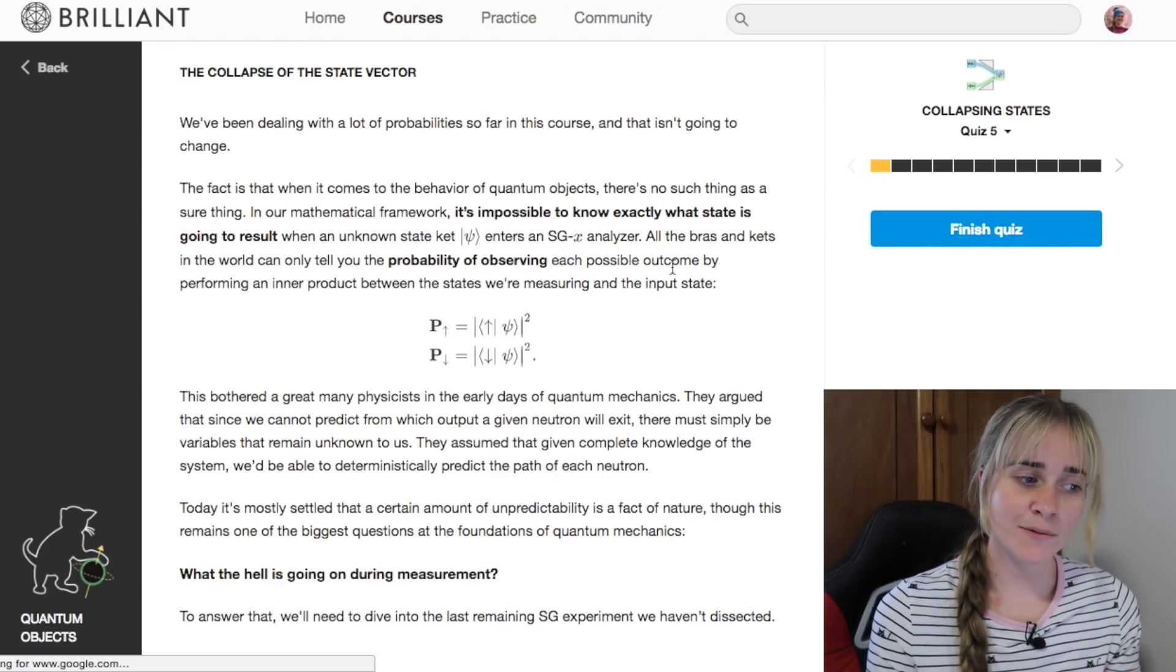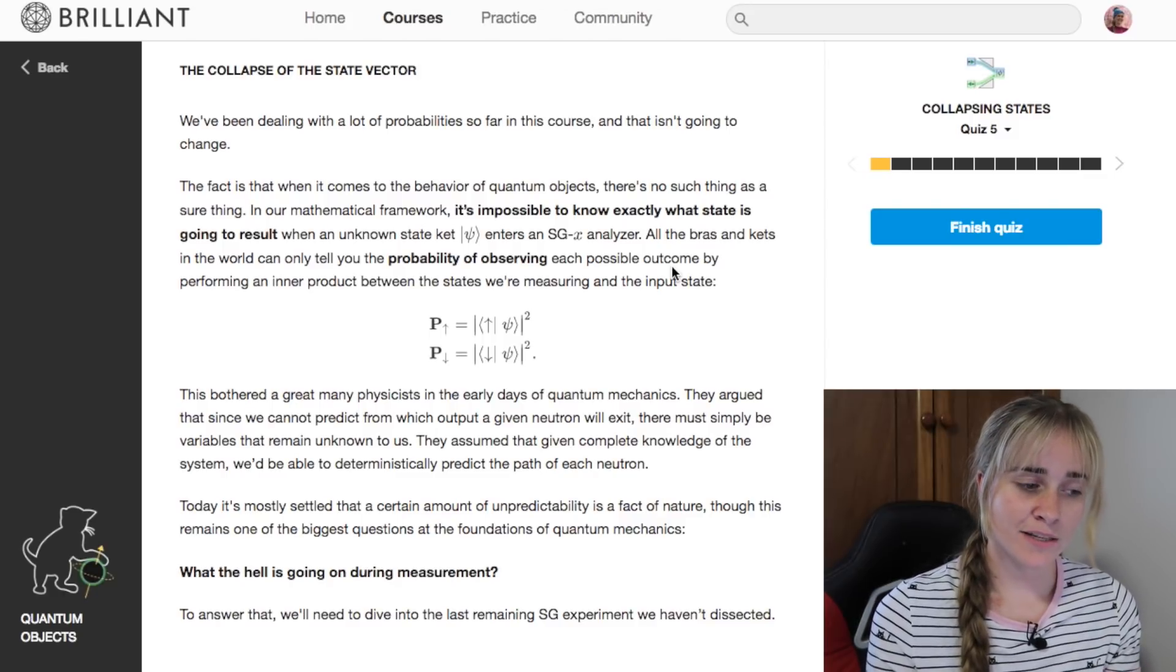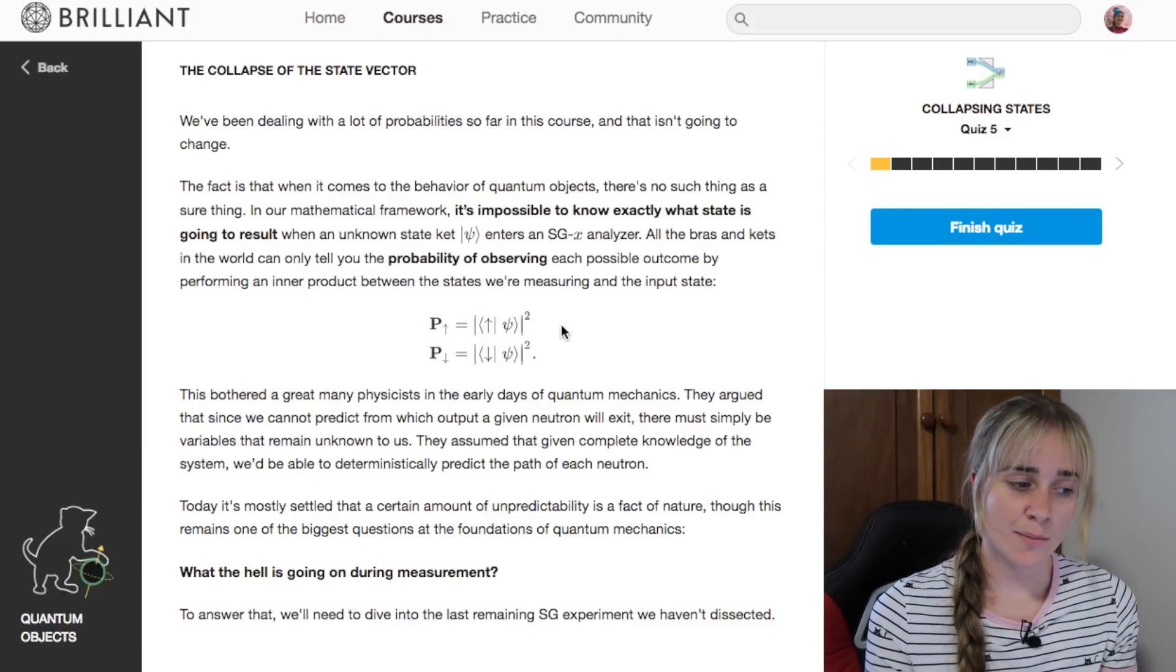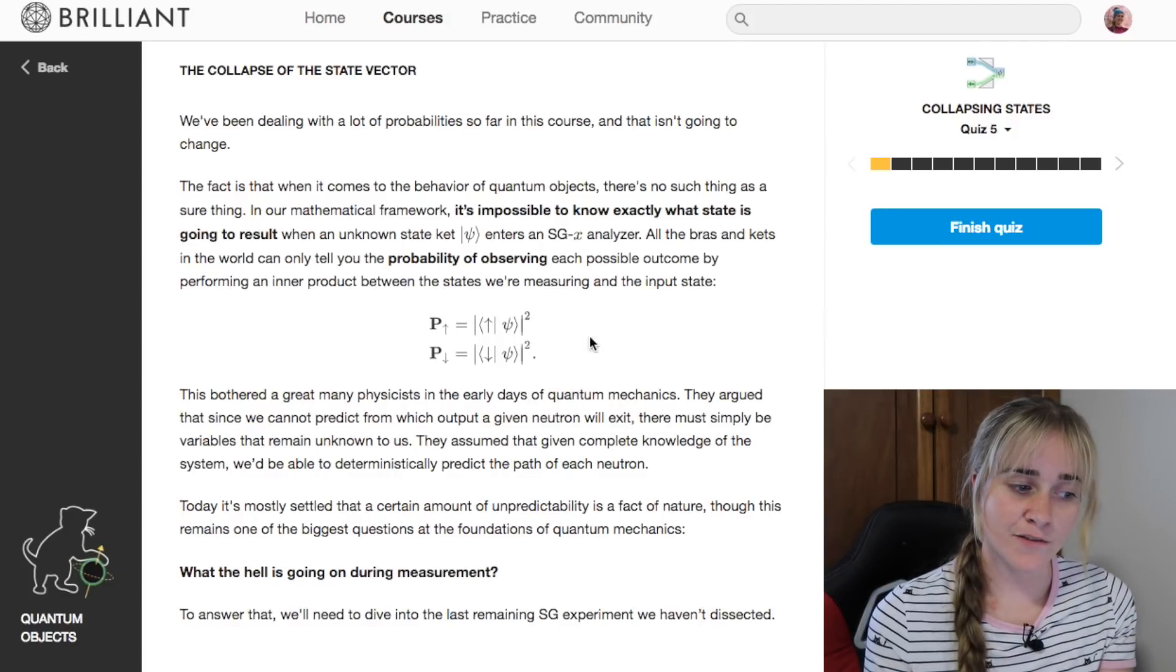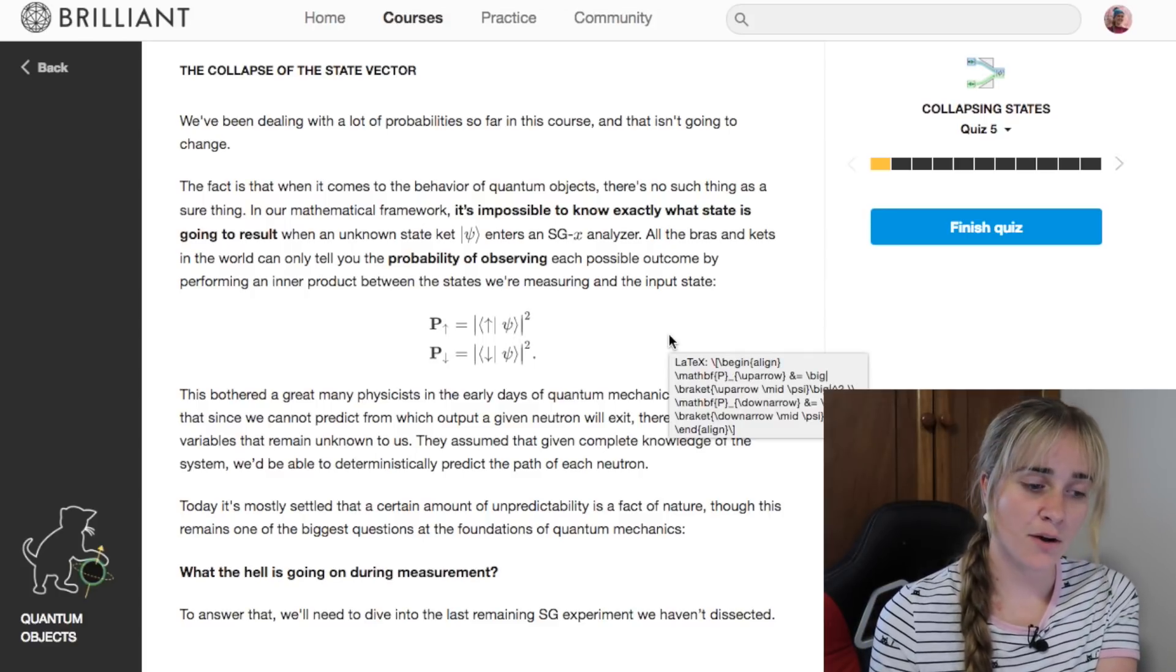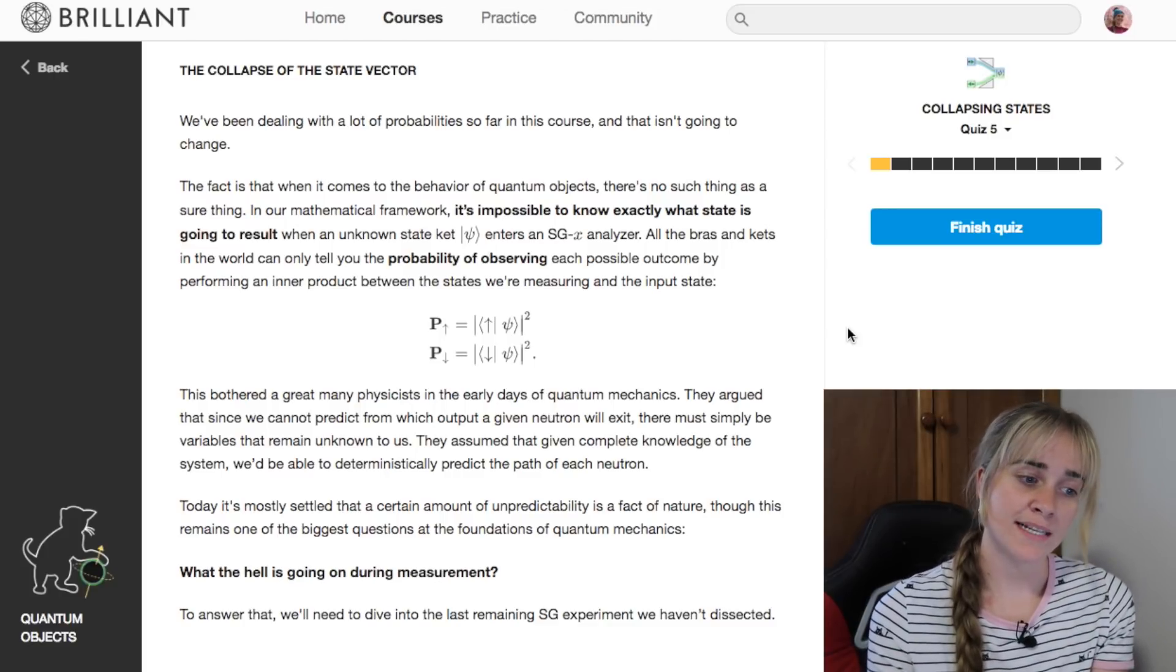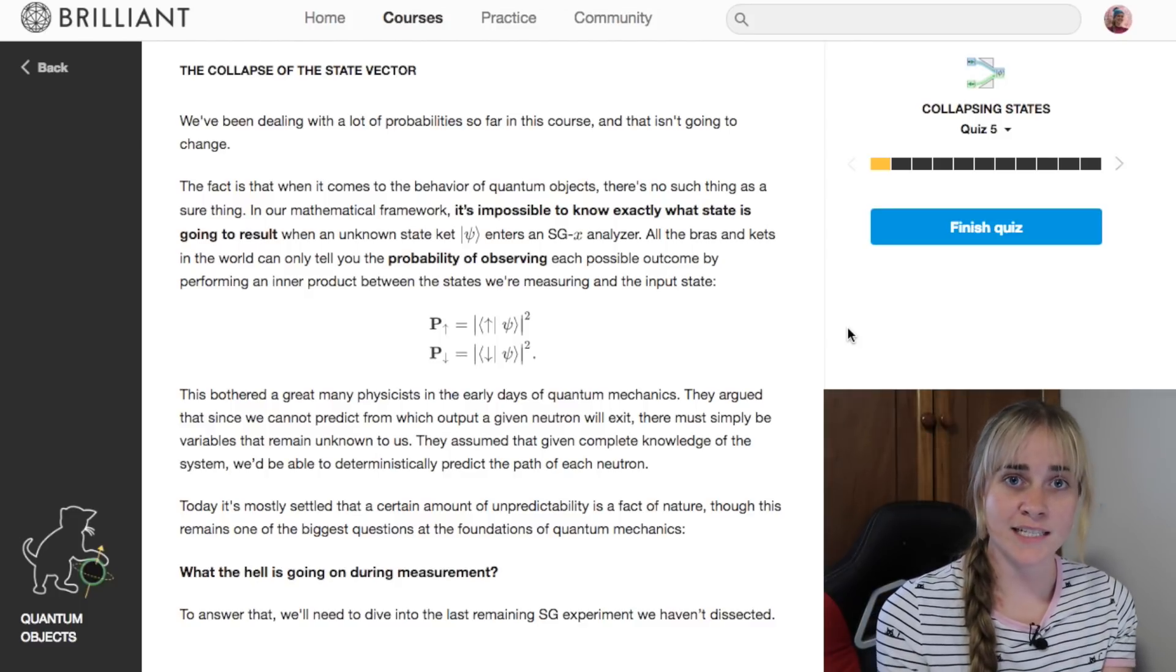We've been dealing with a lot of probabilities so far in this course and we've been making a mathematical framework that you might recognize here. This is a way of representing a probability of observing an outcome from an inner product or bra-ket notation. One thing to know and keep in mind is that through all of this mathematics it's still impossible to know exactly what state is going to result from an experiment.